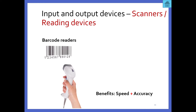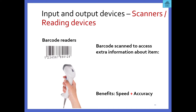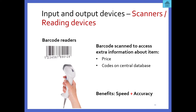Then we have barcode readers. Many of you will know this from the shops — when you're paying, they scan the item, it reads the barcode, and the price comes up. This has a major benefit for speed and accuracy. Barcodes that are scanned give access to information about the price, the code on the central database, and even update records for stock taking and sales figures for that shop.